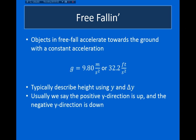Hello and welcome back. In this video, I want to begin discussing free fall motion. This is a very specific example in which an object will experience a constant acceleration. Anytime an object is dropped near the surface of the earth, the object will accelerate towards the ground with an acceleration that's approximately equal to 9.8 meters per second squared.